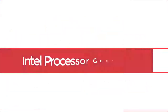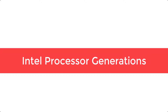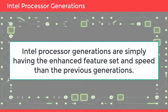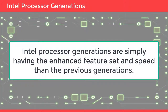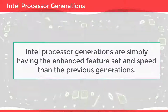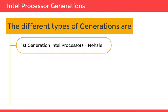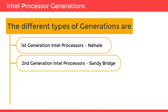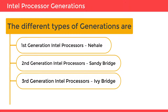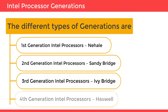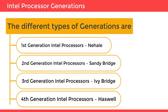Let's look into Intel Next Generation Processors. Intel processor generations simply have an enhanced feature set and speed compared to previous generations. The different types of generations are: first generation called Nehalem, second generation called Sandy Bridge, third generation Ivy Bridge, fourth generation Haswell, and then the next generations.